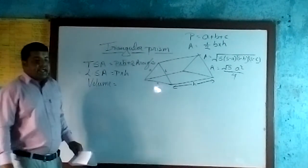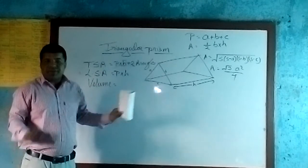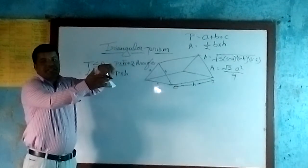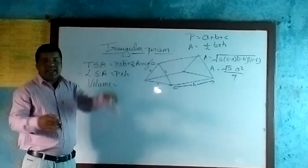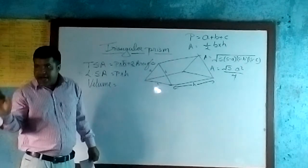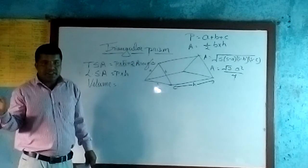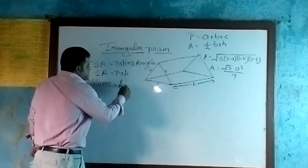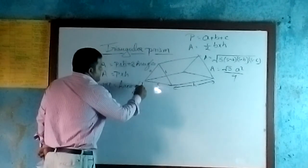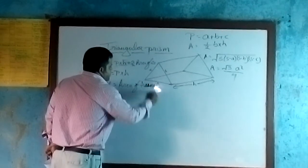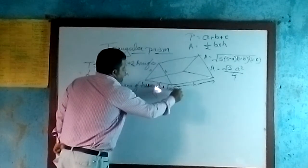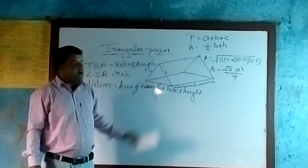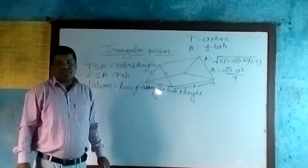The volume of the triangular prism is very simple: base area multiplied by height. Since the base of the triangular prism is in the shape of a triangle, the area of the triangle multiplied by the height is the volume of the triangular prism. So volume of the triangular prism equals area of the triangular base multiplied by height.